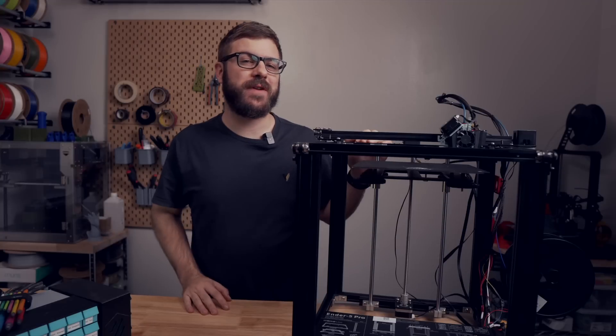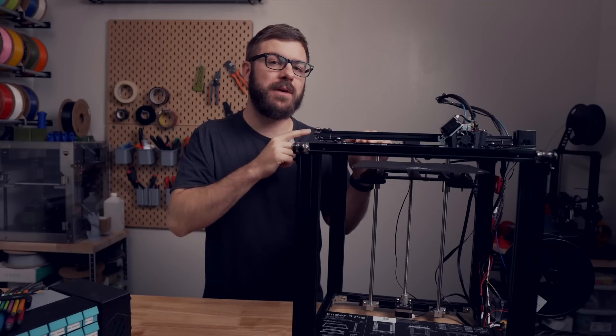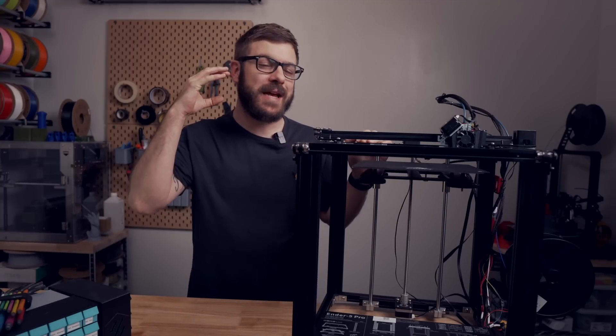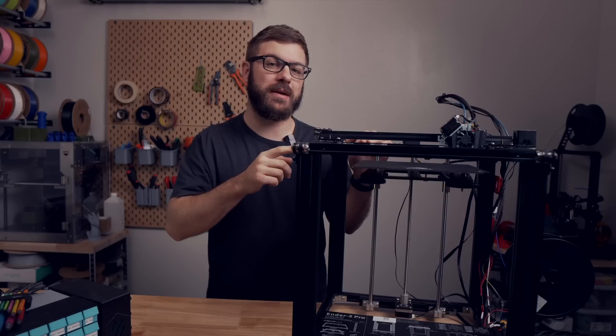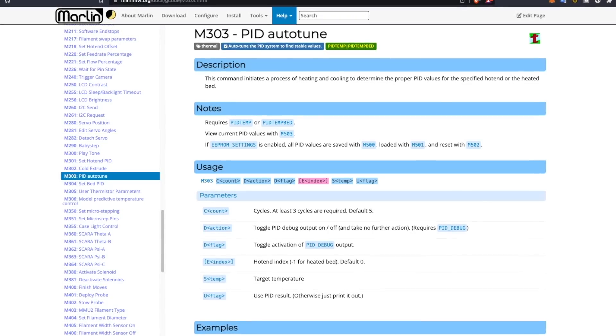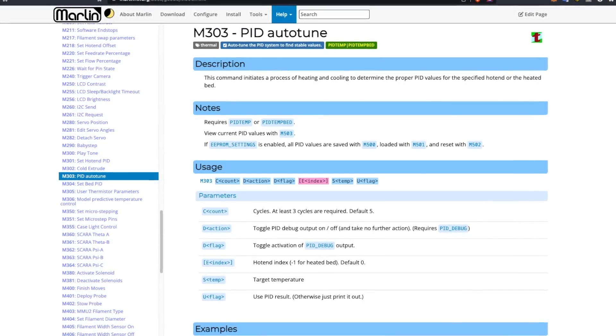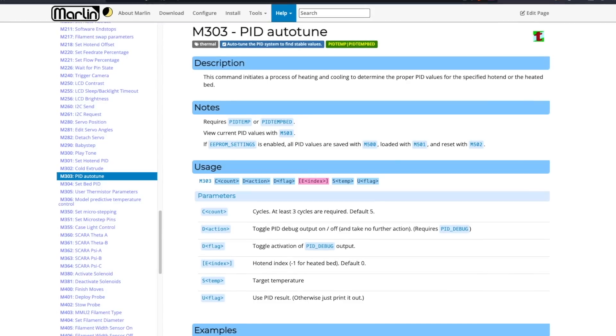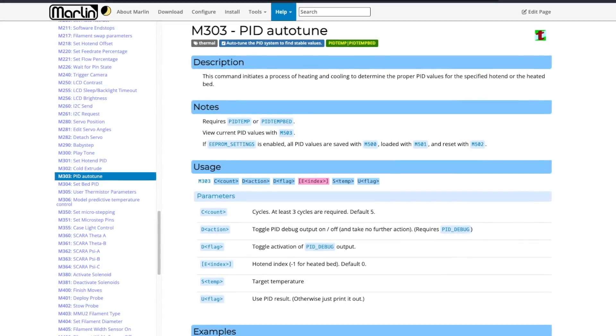I hope that you enjoyed this video and that your Ender 5 is up and running with the NG extruder or you at least have a much better understanding of the process to upgrade. I highly recommend running a PID tune for the new hotend and extruder. It's a super simple process and I will have a link in the description over to some information on how you can do that.